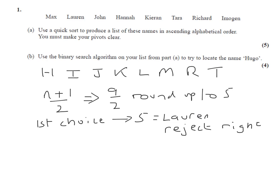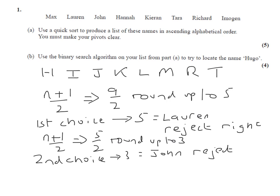So we've now got four names left, so N plus 1 over 2. 4 plus 1 over 2 is 5 over 2. So we round up to 3. So the second choice is number 3, and that is John. John is J, that's after H, so again we reject all the names to the right.